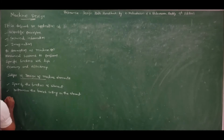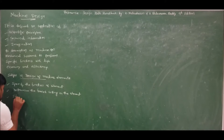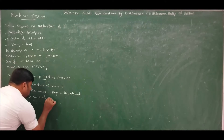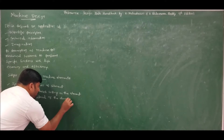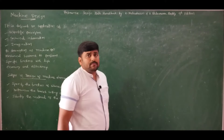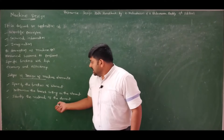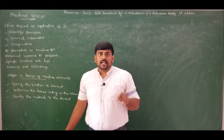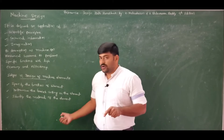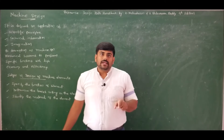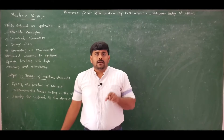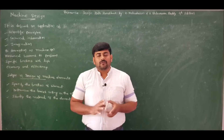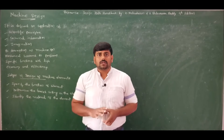The third step is to identify the material of the element. This is very important because for fatigue loading applications the material should possess high fatigue strength — for example, chromium nickel steel has high fatigue strength. Similarly, for flywheels and gears we use cast iron casting, because intricate or difficult shapes can be easily molded with less machining operations. Depending on the forces acting on the machine element, we decide what material it should be made of.